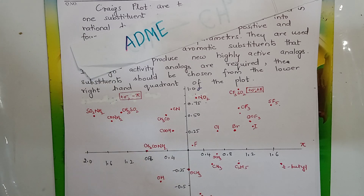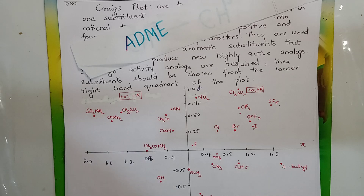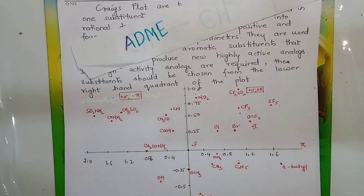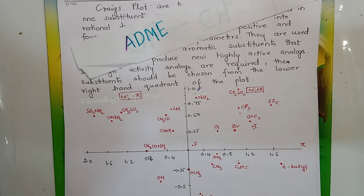Stereochemistry, which played an important role, was ignored. The conformation of the compound, like orientation of groups such as endo and exo, was also ignored. All these aspects were considered in Craig's plots.